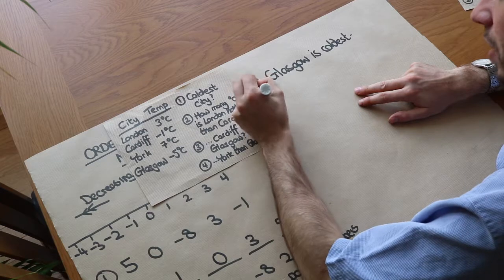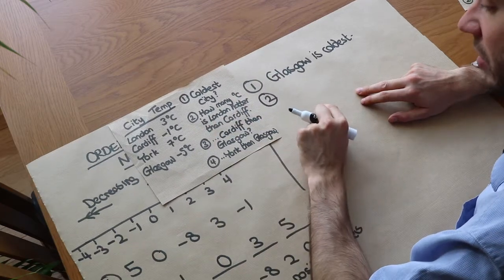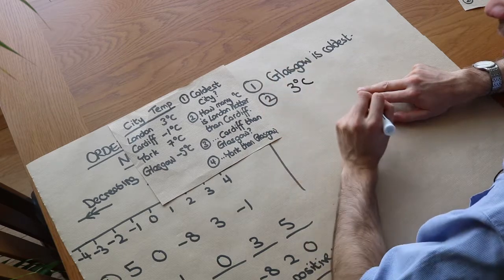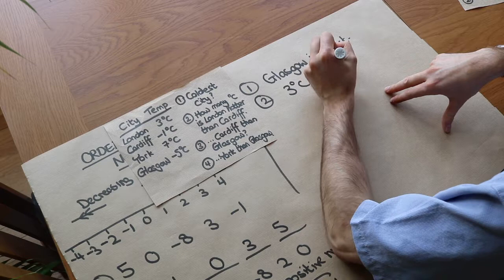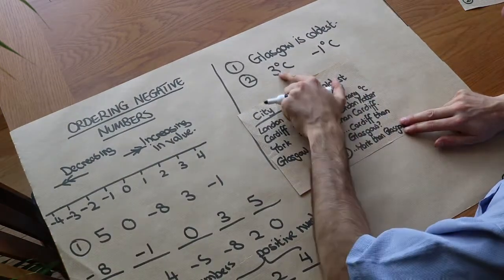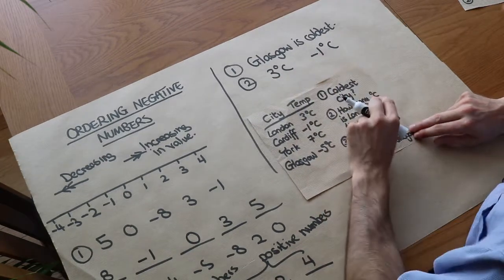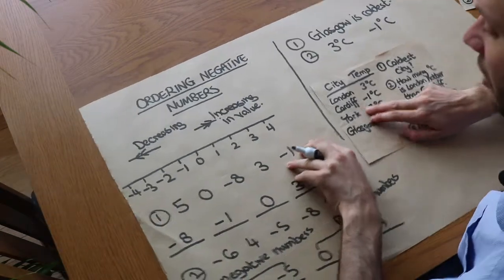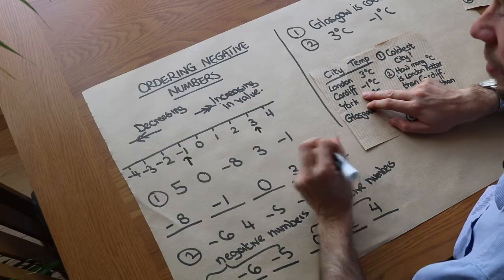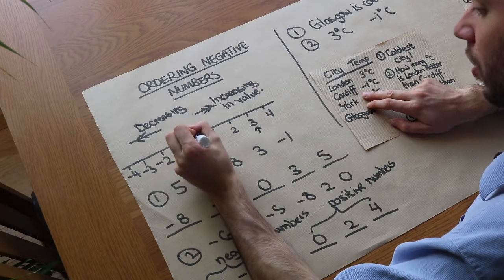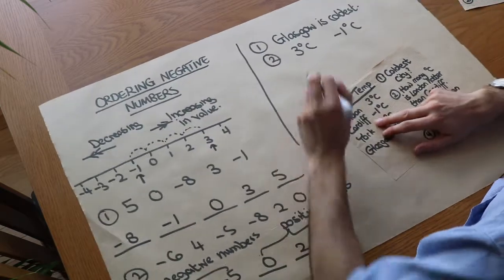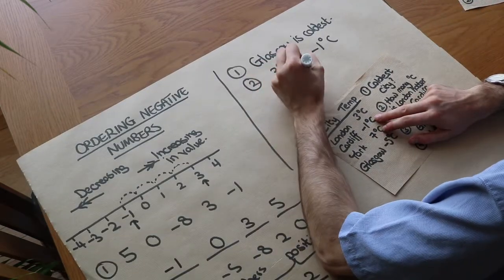How many degrees Celsius is London hotter than Cardiff? London is three degrees Celsius and Cardiff is minus one Celsius. We want the difference between the two numbers, so let's look at the number line. We've got three here and minus one here. Counting the steps: one, two, three, four — a difference of four. So London is four degrees Celsius hotter than Cardiff.